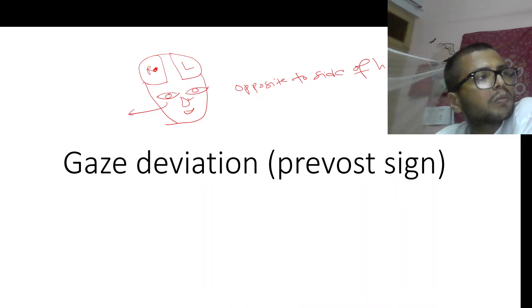...with irritative lesions of the frontal eye field, for example with seizures, there is opposite eye deviation away from the side of lesion. But with destructive lesions like a stroke, there is conjugate eye deviation to the side of lesion.